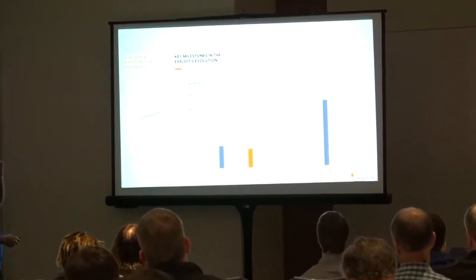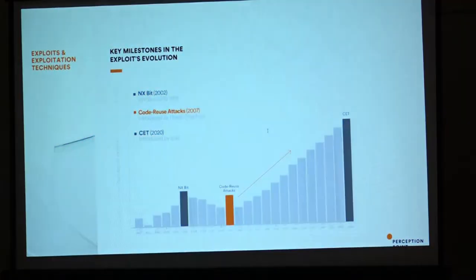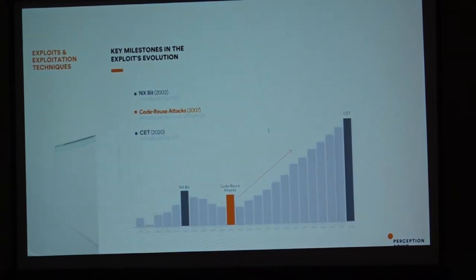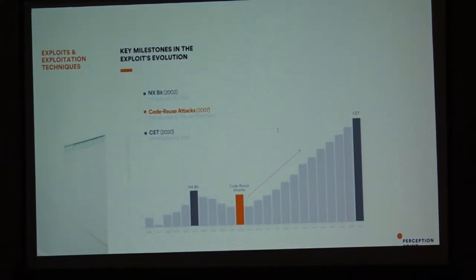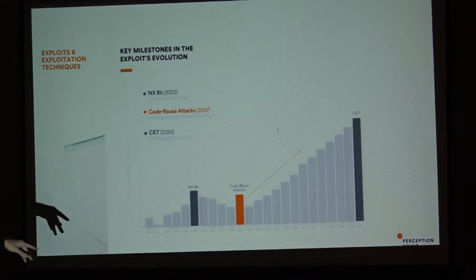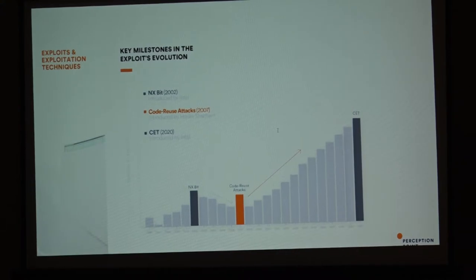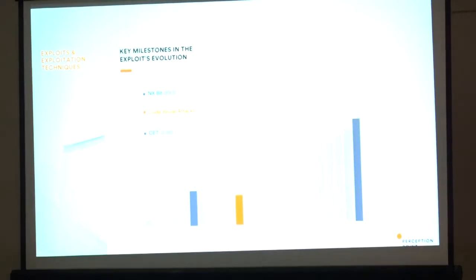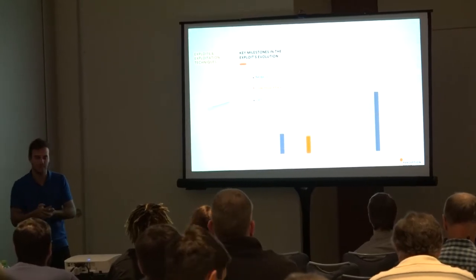A bit about vulnerabilities over the years: back in the 90s, one of the first famous articles was 'Smashing the Stack for Fun and Profit' by Aleph One — people understood they could break software and take over the CPU. Attacks increased, then a solution came out. When NX bit appeared in 2002, exploits in the wild declined. Then a new technique bypassing NX came out, and we saw a rise again. This cat-and-mouse game always goes on.